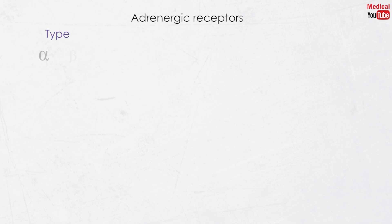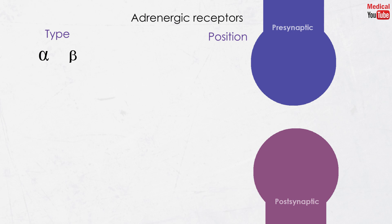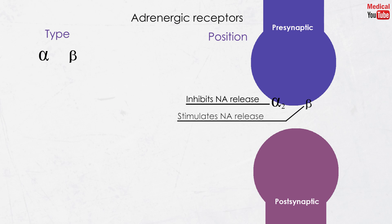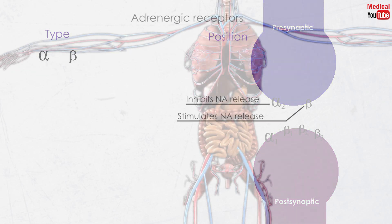Adrenergic receptors are divided according to their type into alpha and beta receptors, and according to their position into presynaptic and postsynaptic receptors. The presynaptic receptors are alpha-2; when activated, they inhibit the release of noradrenaline. The postsynaptic receptors are alpha-1 and beta-1, 2, and 3.